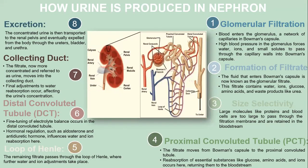How urine is produced in the nephron consists of eight steps. Step one: glomerular filtration. Blood enters the glomerulus, a network of capillaries within the Bowman's capsule. High blood pressure in the glomerulus forces water, ions, and small solutes to pass through the capillary walls into the Bowman's capsule.